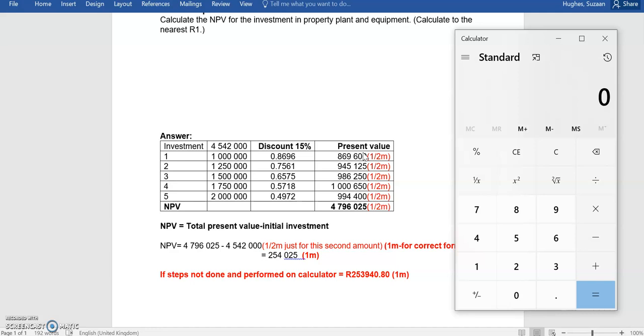To calculate the total present value cash inflows, we need to take each one of these values for present values from year 1 to 5 and add them together. In this case, if we add our 869,600 all the way to our 994,400, that gives us a net present value for future cash inflows from this project of 4.7 million and some change.